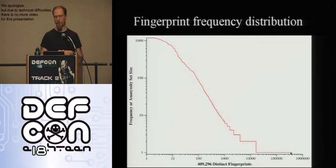It's unique. And then there's another group of people — about 20,000 — who have an anonymity size of two, meaning there were two browsers that had that fingerprint. There's a small group with three, four, five. And then right up the other end, you have a small number of browser fingerprints that were not very unique.